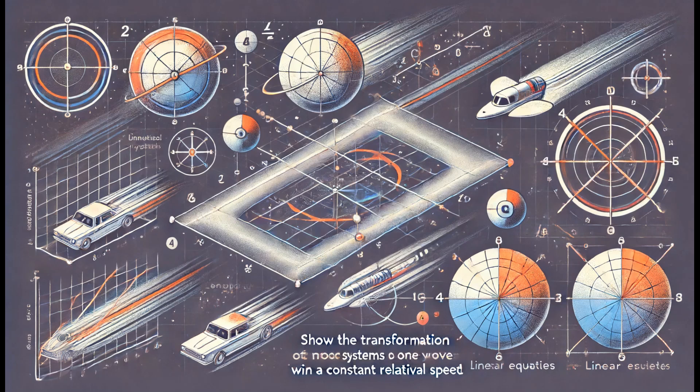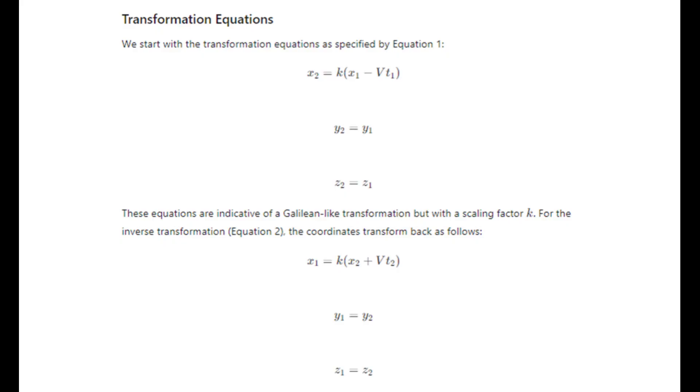The objectivity of a given physical event for all observers in inertial systems is only maintained within the framework of these transformation rules. In this context, the relationship between two coordinate systems moving at a constant relative speed is explained.